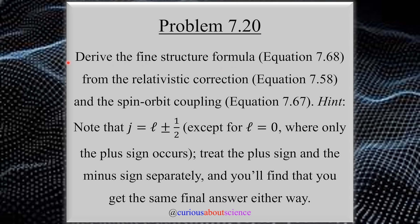In this problem, we're tasked with deriving the fine structure formula from the relativistic correction and the spin-orbit coupling. Hint: note that J, which was equal to the sum of angular momenta, is equal to L plus or minus a half, except for L equals zero, where only the plus sign occurs. Treat the plus sign and the minus sign separately, and you'll find that you get the same final answer either way.